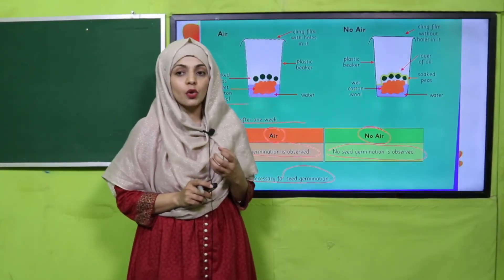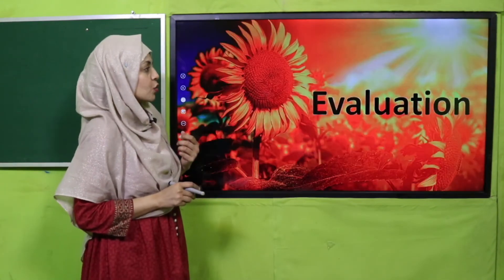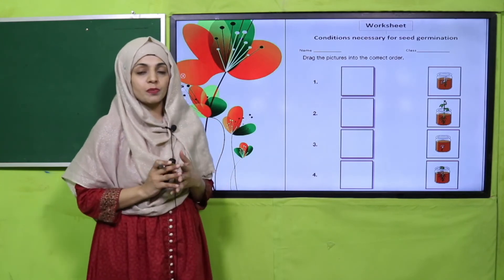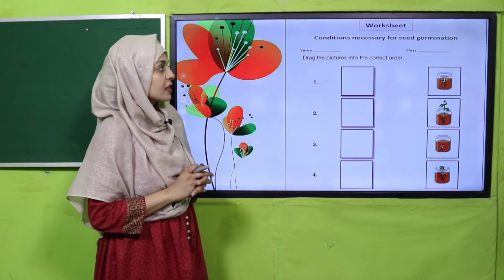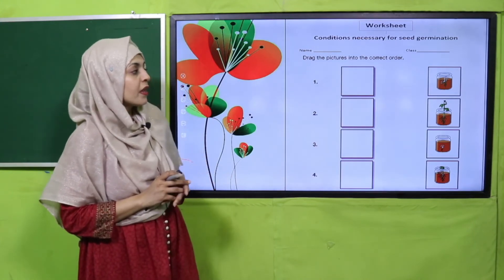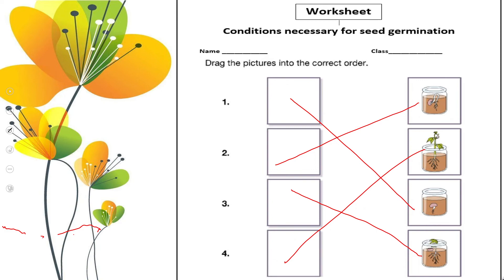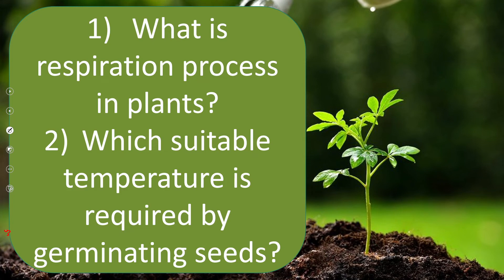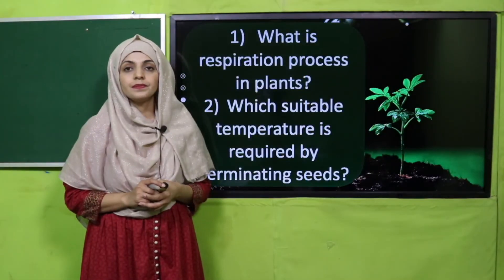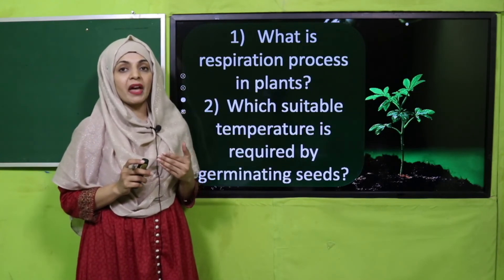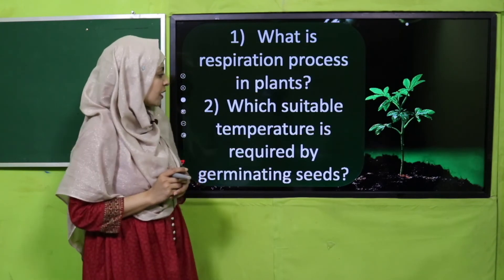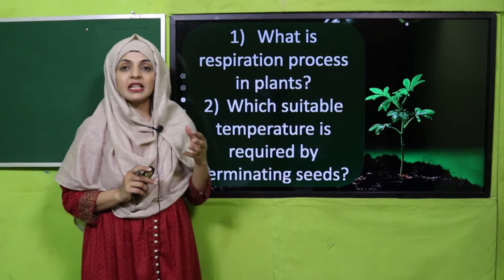From this experiment, it is clear that air is very important for germination. You can download the worksheet for practice from the description box below this video, or get it in print form from your teacher. The worksheet asks you to drag pictures into the correct order of seed germination. Evaluation questions: What is the respiration process in plants? Plants need air for germination to prepare food — this is called respiration. Which suitable temperature is required for germinating seeds? 15 to 30 degrees centigrade.